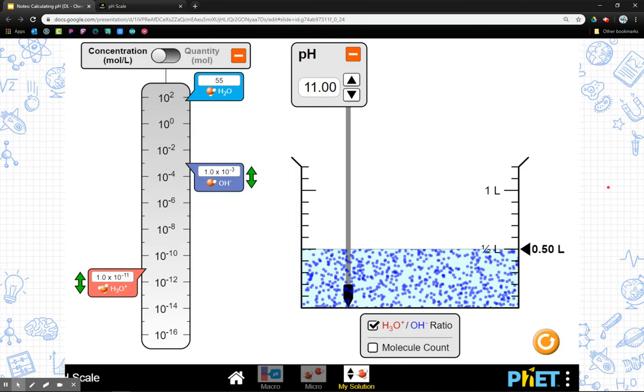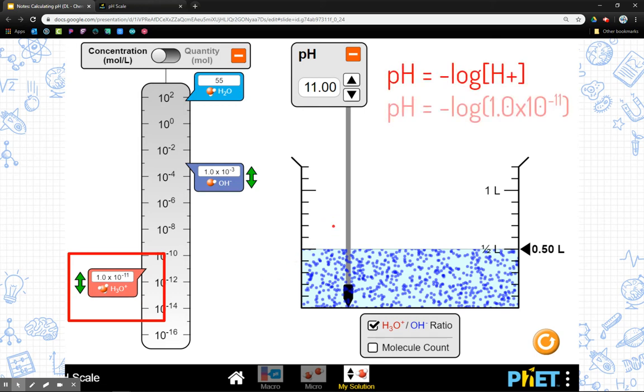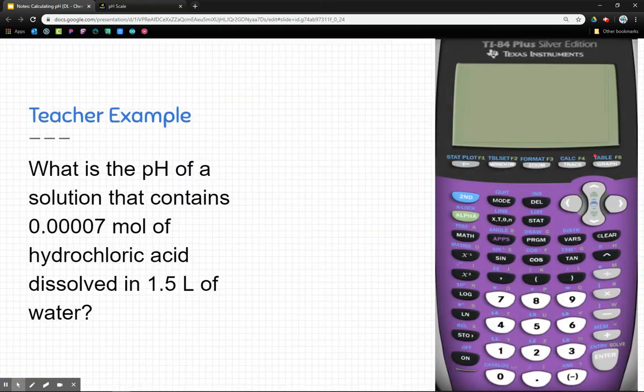Now, what if the solution was basic? Well, here we have a solution and there's still H3O particles in there. There's just not a lot. The concentration is very low. So I'm still going to use the H3O+ or the hydronium concentration, plug that into the negative log, and I'm going to get a very high pH. So we're just focusing on the concentration of H3O+ here in order to determine the pH, and that's how we're going to deal with that.